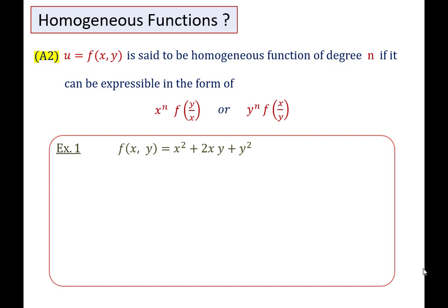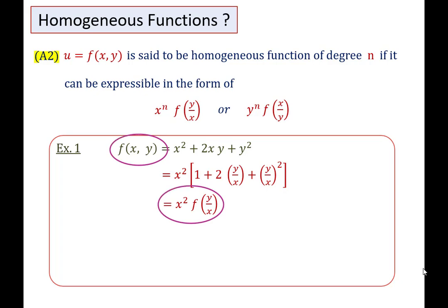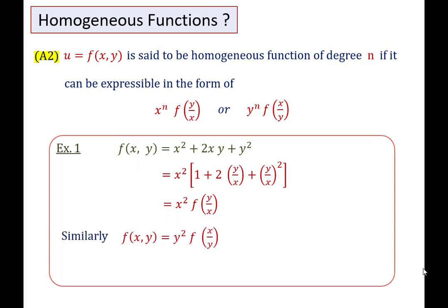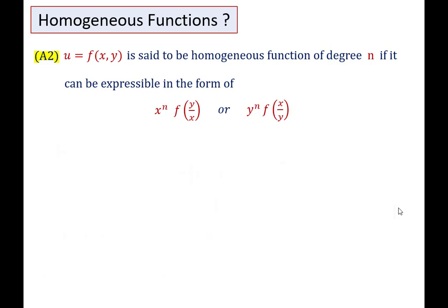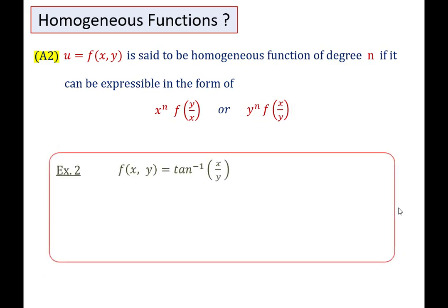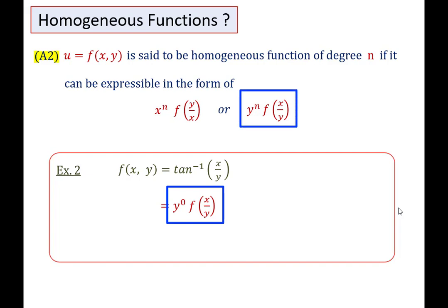First example: function is X² + 2XY + Y². We can take out X² as common, so F(X, Y) can be written in the form X^n f(Y/X). Similarly, if we take Y² as common, then F(X, Y) can be written in the form Y^n f(X/Y). Hence F(X, Y) is a homogeneous function of degree 2. Second example: F(X, Y) = tan⁻¹(X/Y), which is in the form Y^n f(X/Y). So F(X, Y) is a homogeneous function of degree 0.